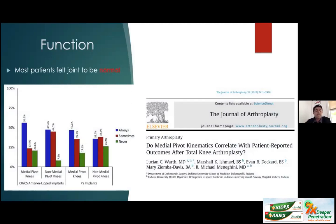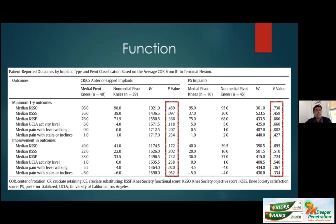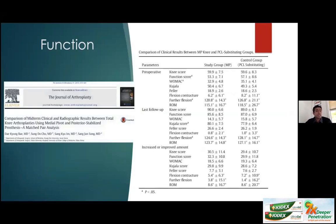With medial pivot designs, most patients felt their knee was normal compared to fewer patients with non-medial pivot designs, suggesting some benefit from medial constraint. However, when looking at functional scores, feeling normal does not make someone more or less functional. A dual pivot pattern is kinematically similar to the native knee, but functionally there is no difference in scores — frustrating for researchers, surgeons, and those reading the literature. If there is no functional benefit, why change what you are doing?